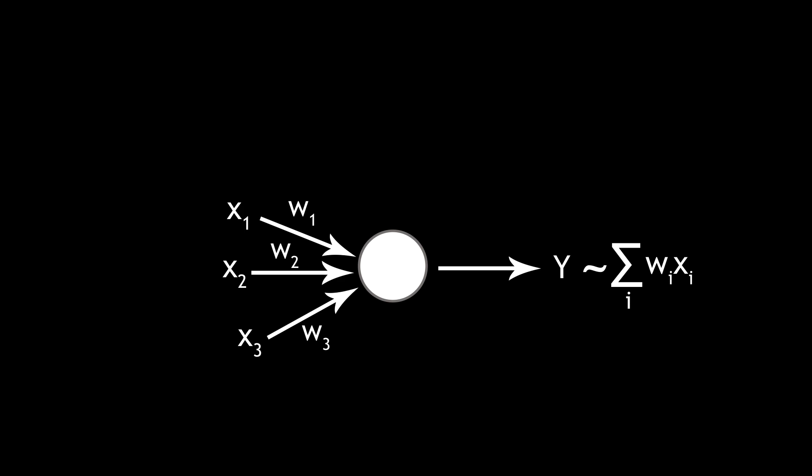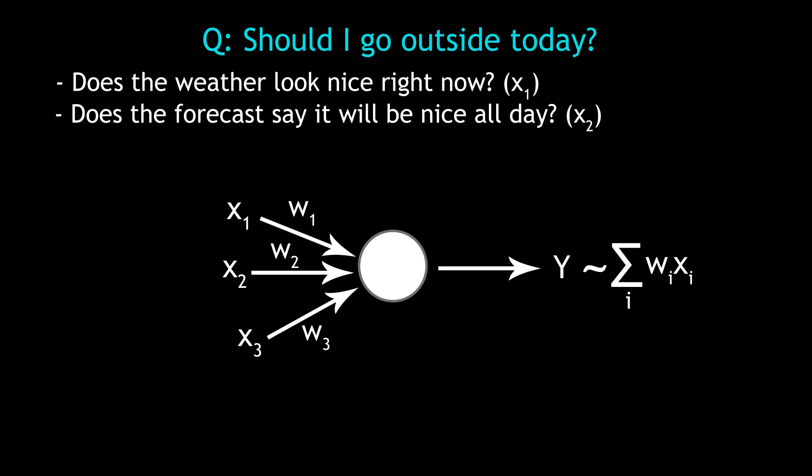Say we're building a perceptron that will compute for us whether or not we should go outside today. The decision might be decided by the following factors. Does the weather look nice right now? Does the forecast say it'll be nice all day? And do I have a jacket? These three factors might be of different importance to you.